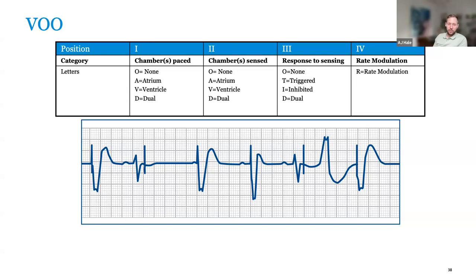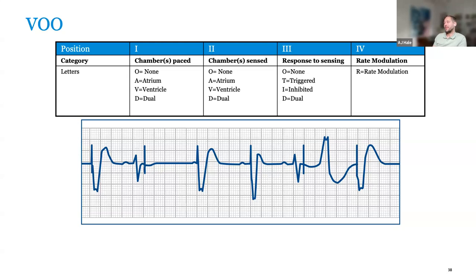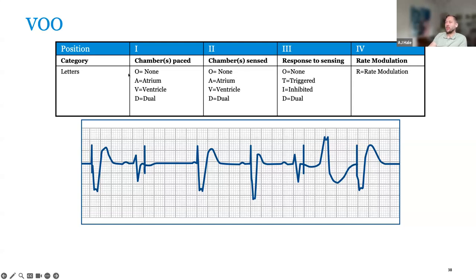The difference between demand pacing and asynchronous: demand is just when the heart needs it — it demands it. Asynchronous covers VOO, DOO, AOO types, which means it doesn't respond to sensing and doesn't bother to sense at all — it just paces at the base rate no matter what.